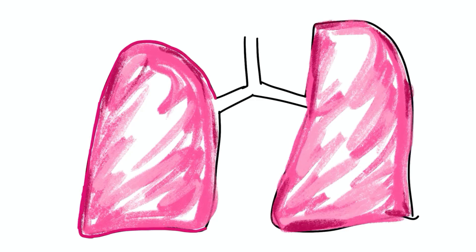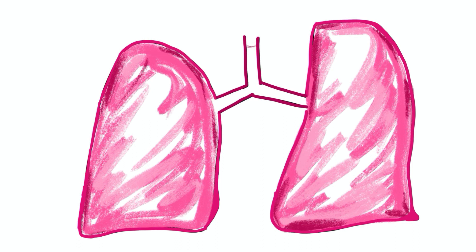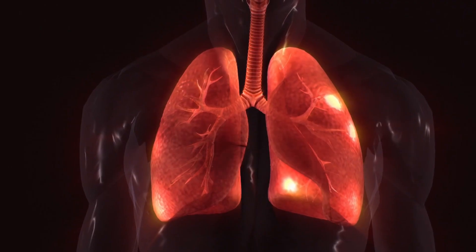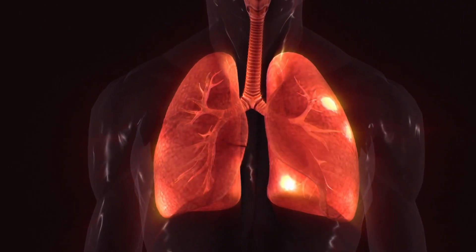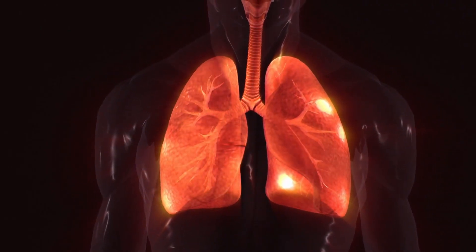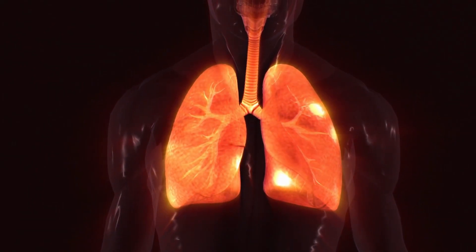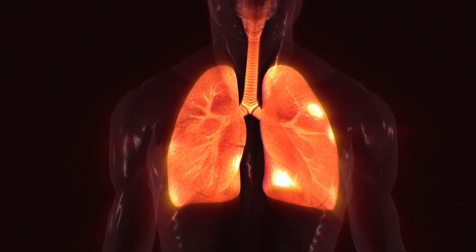The outermost layer is called the parietal pleura and it attaches to the chest wall. The inner layer is the visceral pleura and it covers the lungs, blood vessels, nerves and the bronchi. The tissues secrete lubricating fluids which allow the lungs to move smoothly in the chest cavity during respiration.